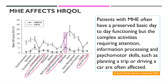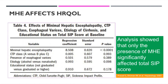Another concern is sleep and rest — these patients have very poor sleep. When performing studies on health-related quality of life, there are many confounders: severity of liver disease, presence or absence of portal hypertension, etiology (alcohol versus non-alcohol), and educational status. However, multivariate analysis showed that only the presence of minimal HE significantly affected the total SIP score.